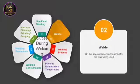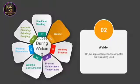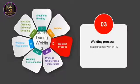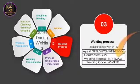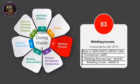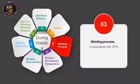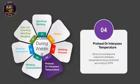During welding, the welding inspector should also check that welder qualification is valid and up to date. The welding process should be in accordance with the WPS. In this picture, you can see the SMAW process is mentioned on the WPS. If you are working according to this WPS, then the welding process should be SMAW.